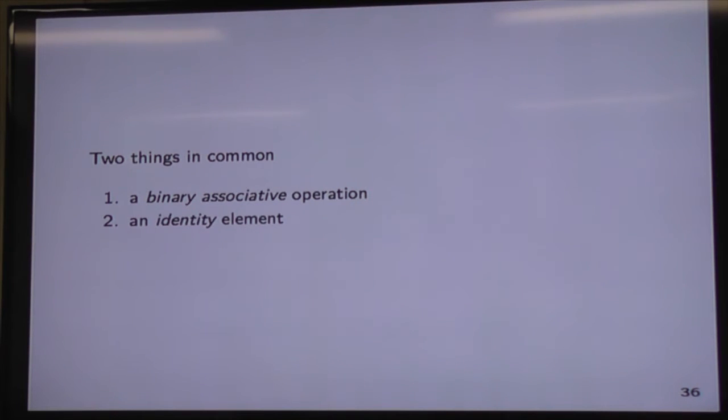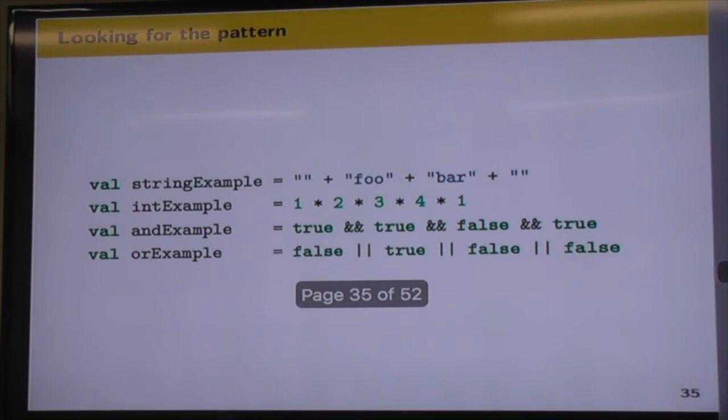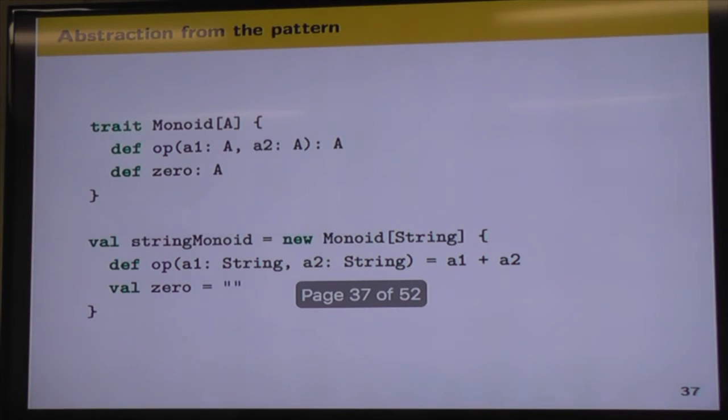And the other thing we have in common is the identity element. So the identity is specific to the operation and the type that we're working with, but it's a special value that when combined with any other value of that type using an operation, we'll get the exact same value back. So again, looking at our examples, look at string concatenation, we've got the empty string on the end there. So any time we concatenate the empty string to another string, we get that other string back. It remains unchanged.